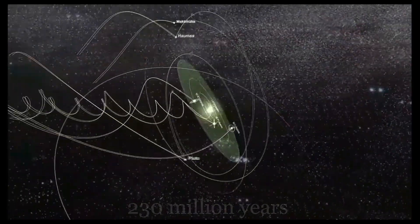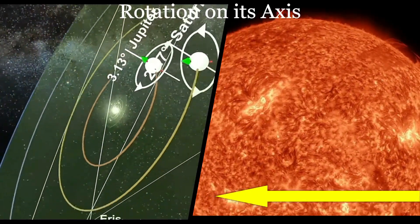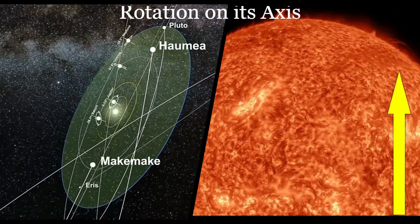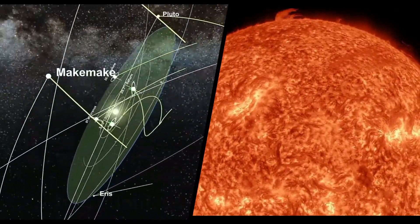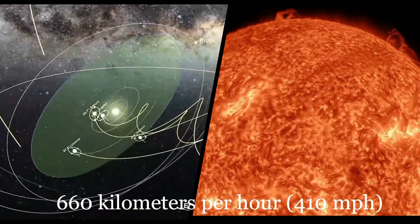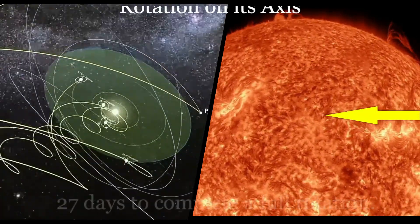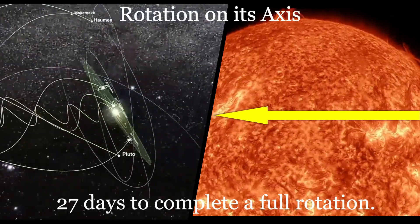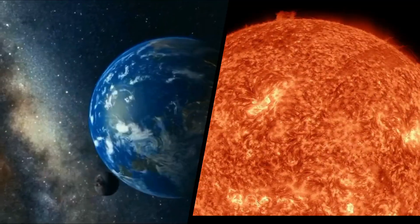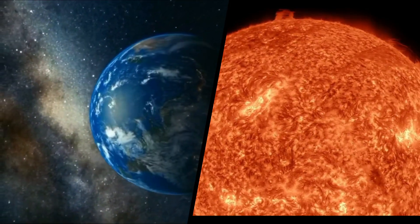Rotation on its axis: the Sun also spins on its own axis, but this rotation speed varies depending on latitude. At its equator, the Sun rotates at a speed of roughly 660 kilometers per hour (410 miles per hour), taking about 27 days to complete a full rotation. This rotation is slower compared to the speed of a planet like Earth, because the Sun is a giant ball of gas and not a solid body.